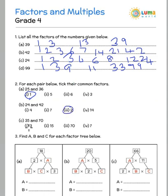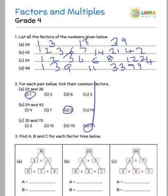For 35 and 70: 3 is not a factor of 35, 15 is not a factor of 35, and 70 is not a factor of 35. But 7 is a factor of 35 and 7 is a factor of 70, so the answer is 7. Let us circle 7.